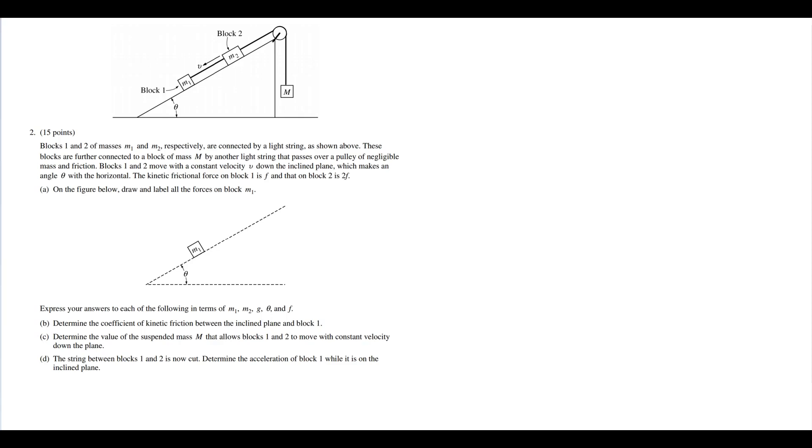Let's start the problem. Blocks one and two of masses m1 and m2, respectively, are connected by a light string as shown above. These blocks are further connected to a block of mass M by another light string that passes over a pulley of negligible mass and friction.